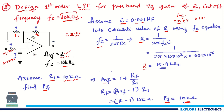You can assume any other value for R1, but remember: R1 should be more than 1 kΩ. Similarly, if C is not given, assume C less than 1 μF. These are the two design rules. These are the two types of problems typically asked in exams or interviews on first-order low pass filters. We will look at other filter problems in the next video.